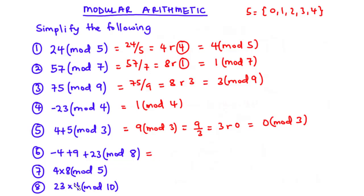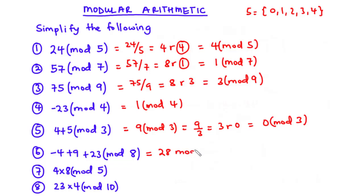Question 6: (-4 + 9 + 23) modulo 8. We add all the values: -4 + 9 = 5, and 5 + 23 = 28, so this simplifies to 28 modulo 8. Since 28 is greater than 8, we divide: 8 times 3 is 24, giving remainder 4 (28 minus 24). So 28 mod 8 equals 4.